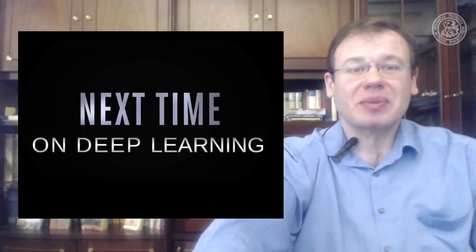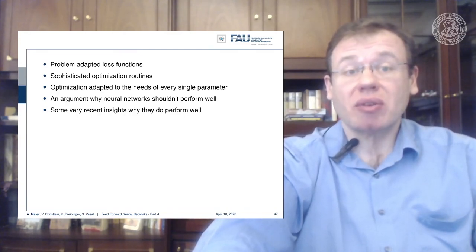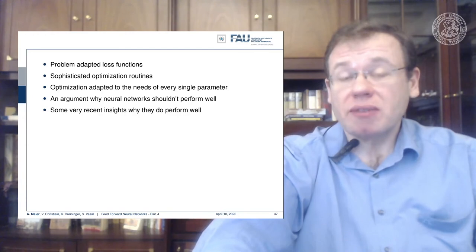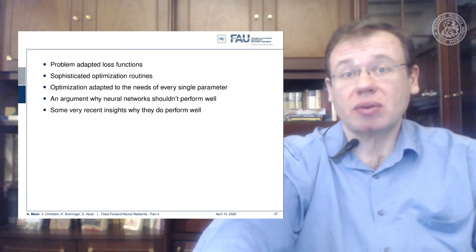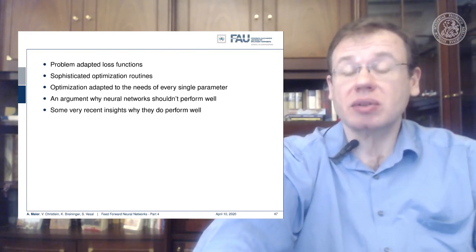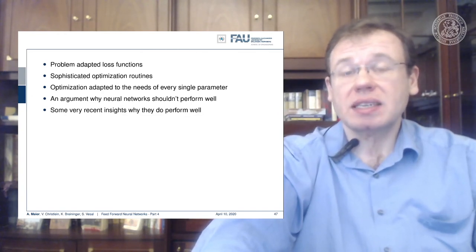Next time in deep learning, we will see problem-adapted loss functions for both regression and classification. We'll also see that choosing a fixed learning rate eta is probably not the right way to go — there are much better optimization methods that can be adapted to the needs of every single parameter. We'll also see an argument for why neural networks shouldn't perform that well, and some recent insights into why they actually do perform quite well.